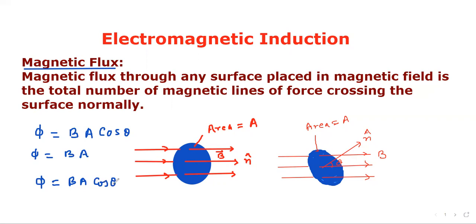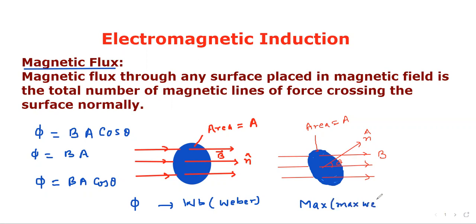The unit of magnetic flux: phi is measured in Weber, which is the SI unit. In CGS units, it is Maxwell. The conversion is such that 10 to the power 8 Maxwell equals 1 Weber.